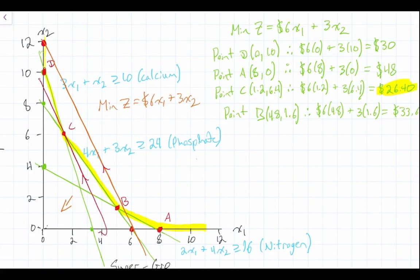And in our previous video where we identified that the optimal solution was point C using the corner point method, we now have two solutions that point to the same thing. That point C is our optimal solution. So that's how we use the objective function to find our optimal solution.